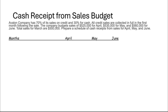Let's take a look at our example. This is a cash receipts from sales budget. They have 70% of its sales on credit and 30% are cash. All credit sales are collected in full in the first month following the sale. We all know that's not always true in reality, but we do it for homework. The company's budgeted sales for April, May, and June are provided, plus March's, because you need that to see how much of the prior month you're going to collect in April. So in April, you're going to collect 70% of March's sales.